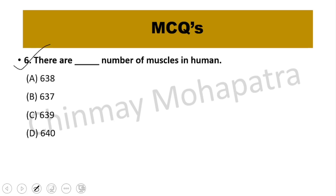Question number 6: How many muscles are in the human body? Most commonly we say approximately 600, but the more precise right answer is about 639 muscles in the human body.